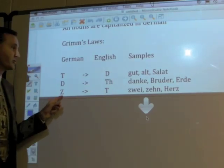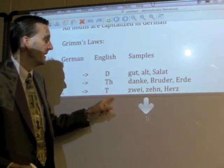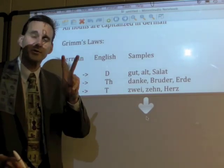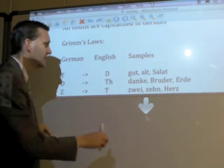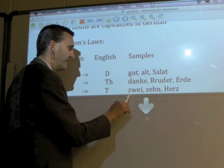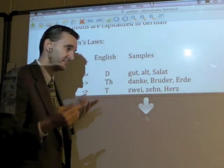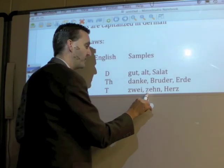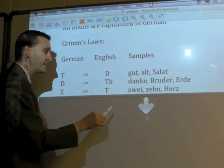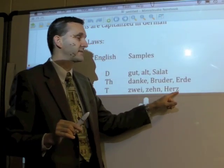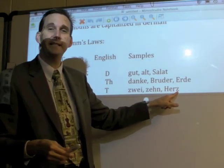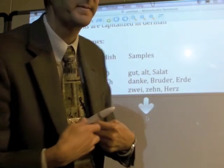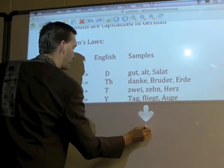The Z in German becomes a T in English — like two of our numbers. 'Zwei' and 'zehn'. That's why we spell the number two that strange way, T-W-O, because the German is 'Zwei', so the Z just becomes a T. And 'zehn', the number ten, is spelled with a Z in German but became a T in English. Also 'Herz' — if you know the Z becomes a T, you can guess that 'Herz' means 'heart'.